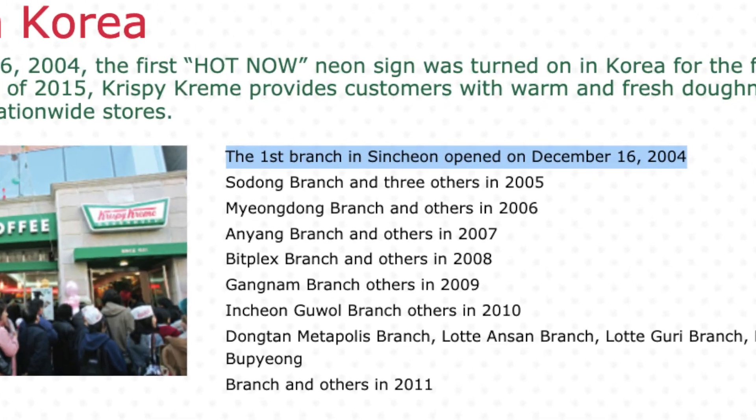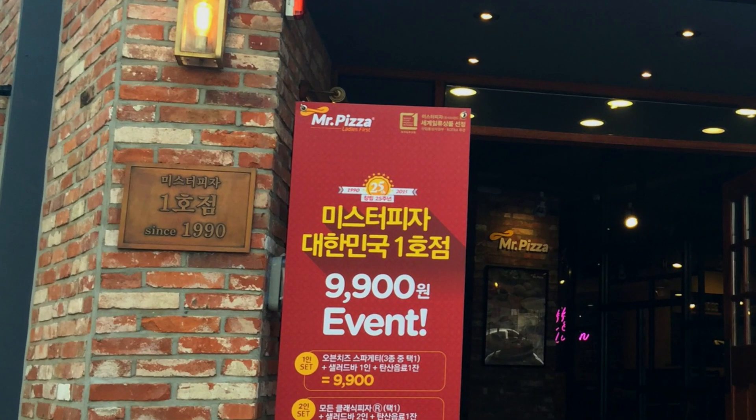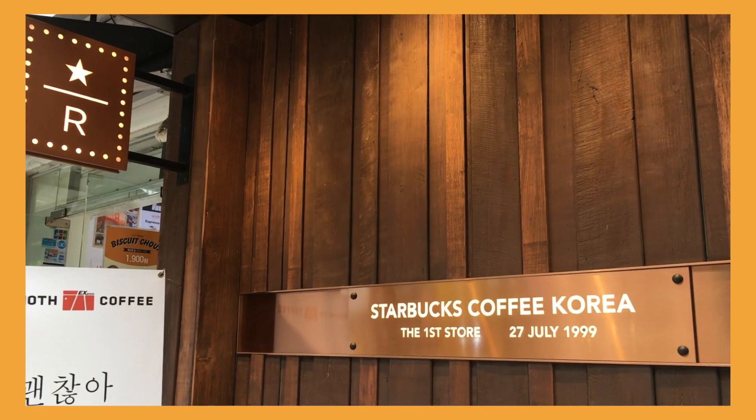There was a large young population open to and curious about Western culture. So Shincheon became the experimental ground for new companies wanting to enter the South Korean market. Chains like Krispy Kreme, Twosome Place, and Mr. Pizza all opened their first shops in Shincheon to test the market, and only upon success would they expand across the country. Marketing experts used to call Shincheon an indicator for business success, and it became a central part of alternative culture in South Korea.